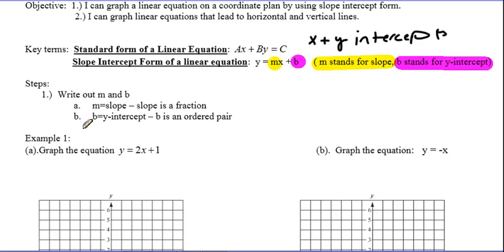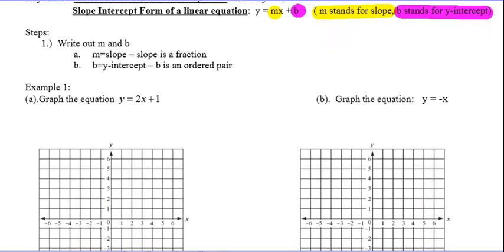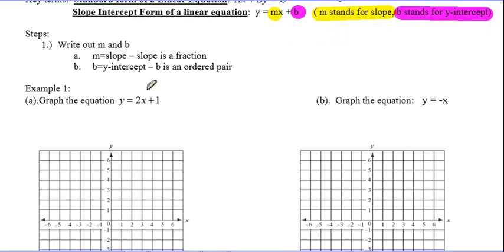So one of the things we're going to do is a simple process. We're going to write out our m and b, and then from there we're going to begin at b and then do the slope. Looking at this problem, example 1, you'll notice that I have a slope that is 2 and a y-intercept that is positive 1. I'm going to write that out. m equals 2 over 1, and the b is a point 0, 1.